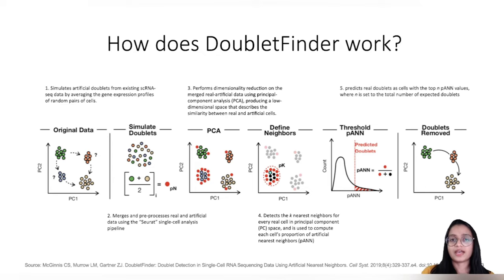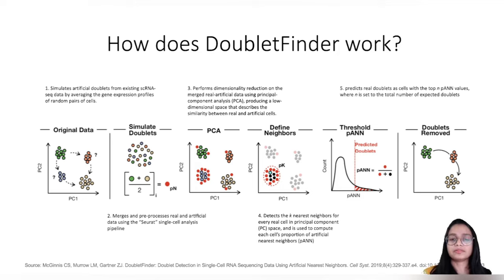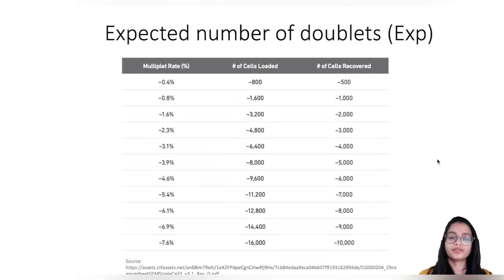In the last step, the proportion of artificial nearest neighbors identified for each cell is thresholded using the total number of expected doublets to predict the real doublets. There are different strategies to find the optimal pK value depending on whether your data has ground truth labels — doublet labels empirically defined from sample multiplexing approaches. If your dataset has no such ground truth labels, different strategies exist for finding the optimal pK value.